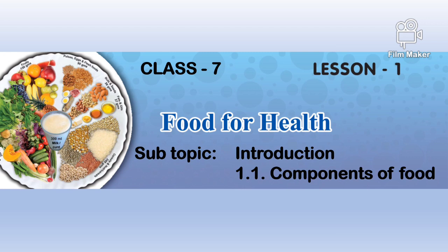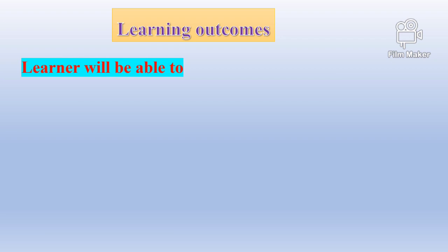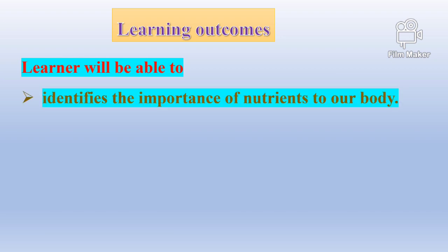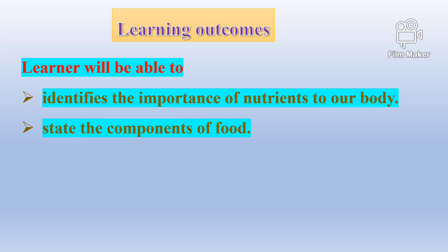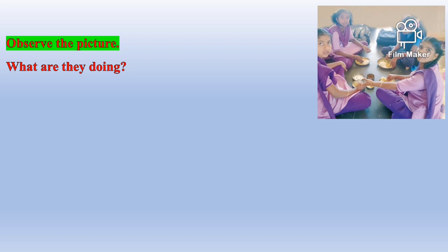Class 7, Lesson 1: Food for Health. Subtopics: Introduction and Components of Food. Learning outcomes: at the end of this video, learners will be able to identify the importance of nutrients to our body, state the components of food, and classify the components of food into macro and micronutrients.